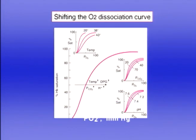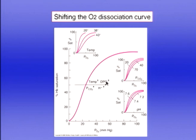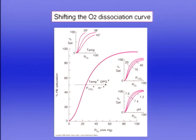The oxygen dissociation curve is shifted by four factors: increased temperature, increased PCO₂, increased hydrogen ion concentration, and 2,3-diphosphoglycerate. All shift the curve to the right, decreasing oxygen affinity for hemoglobin. I remember this because exercising muscle is hot, has high PCO₂, and increased hydrogen ion concentration from both PCO₂ and lactate. It's advantageous for exercising muscle to have reduced oxygen affinity so hemoglobin can unload more oxygen to the tissues.